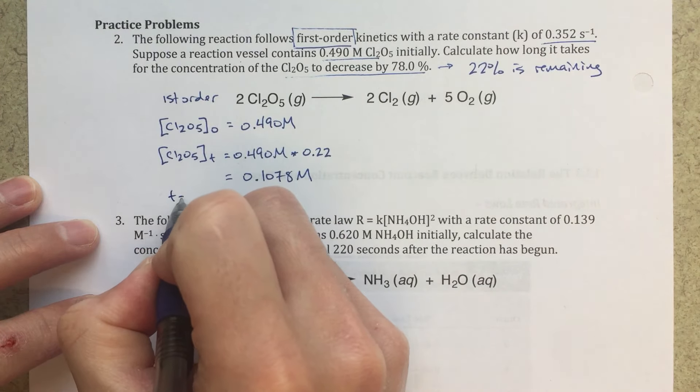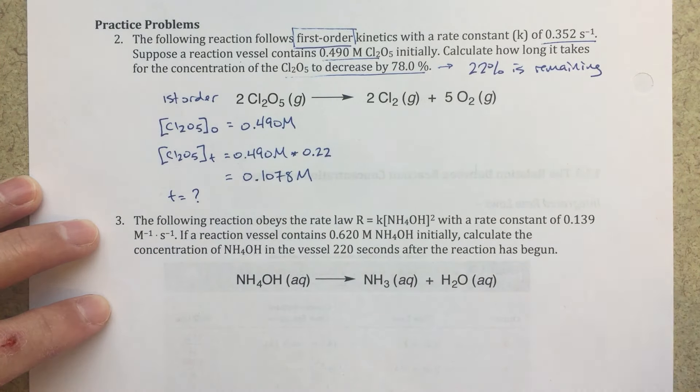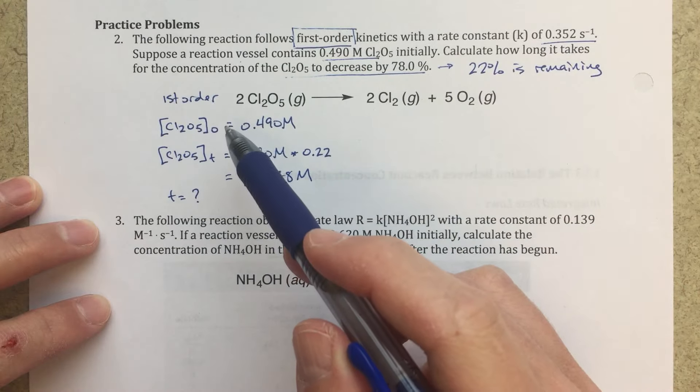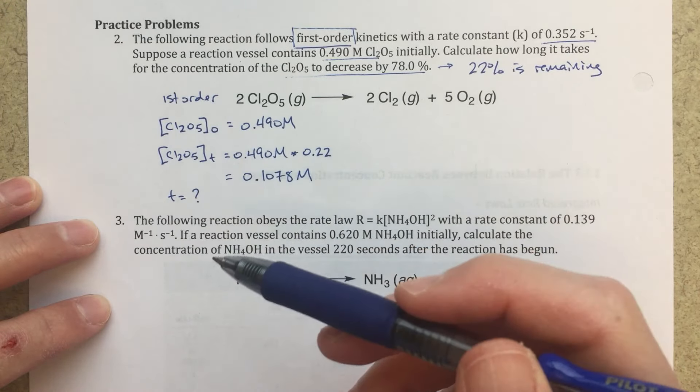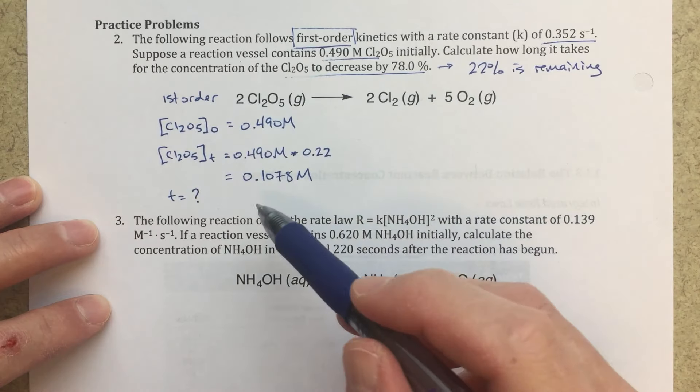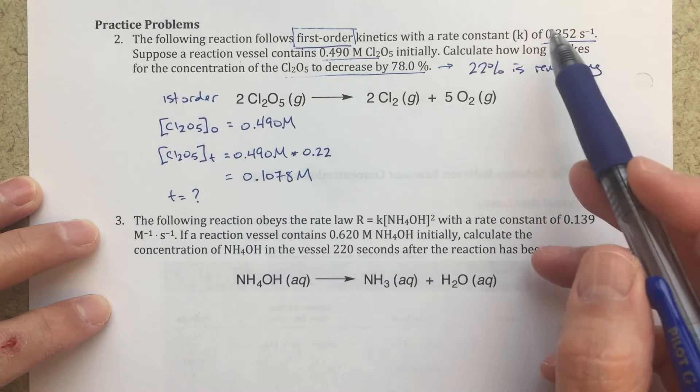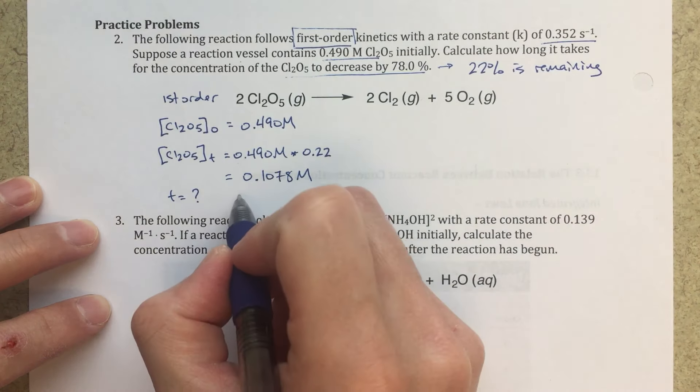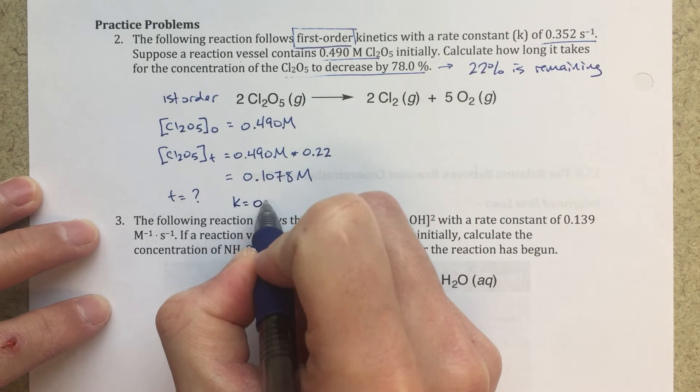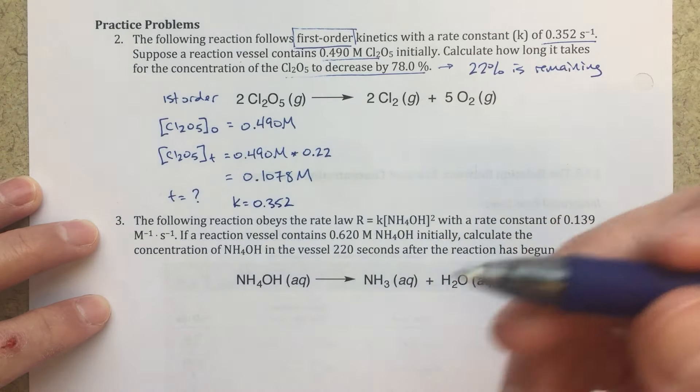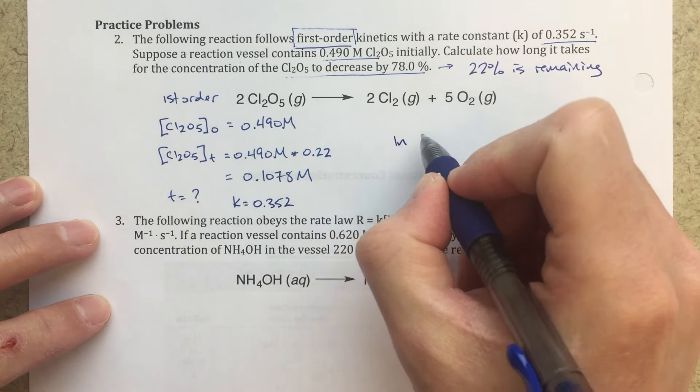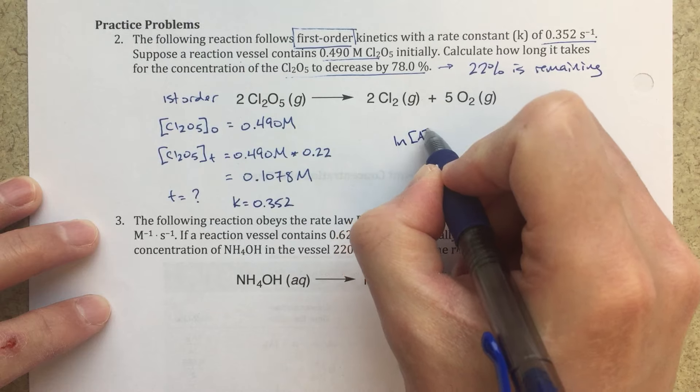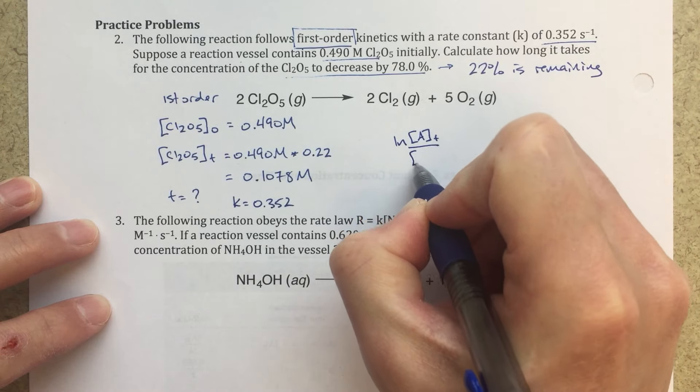And then what we're looking for is what that time is. So if we're given something like this, where I've got initial concentration, final concentration, or concentration at time T, we're asked to find a time. We're given a K value. So I forgot to write the K value in over here, but I've got that K value, so maybe we'll write it here. K equals 0.352. To me, this is just screaming, hey, you should use the integrated rate law.